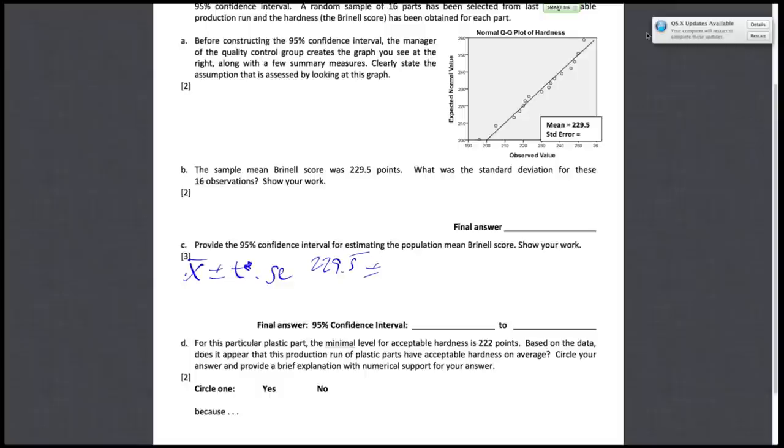You're going to use degrees of freedom equals 15 because the sample is 16, and the degrees of freedom is essentially n minus 1. So that's just 16 minus 1, which gives us 15. So df will be 15. And they specify 95% confidence interval. And if you look at the table A2 using df equals 15 and 95%, we're going to find that t star is equal to 2.13.